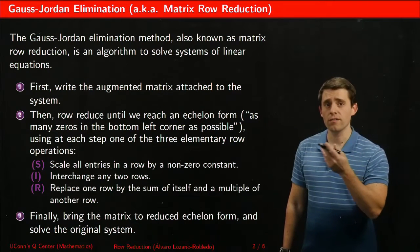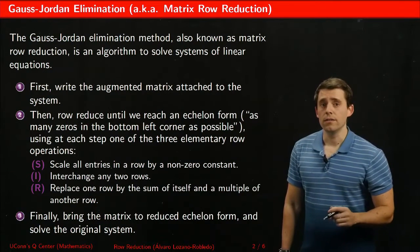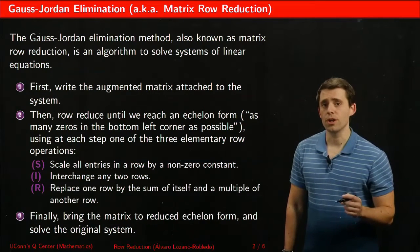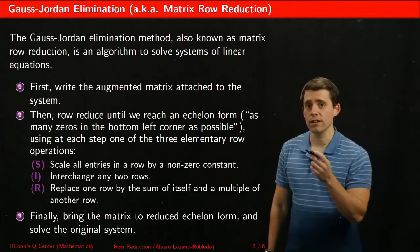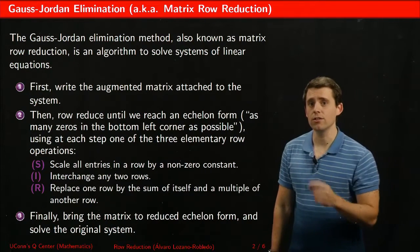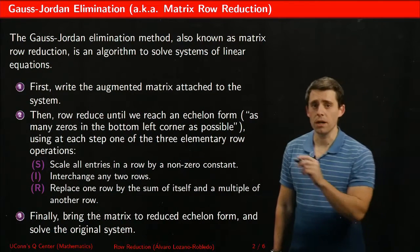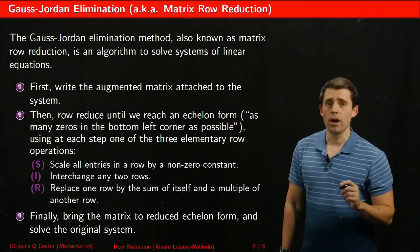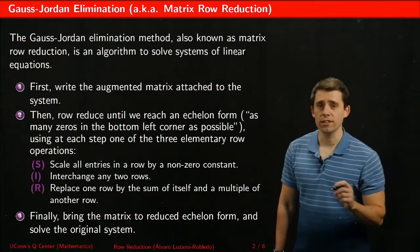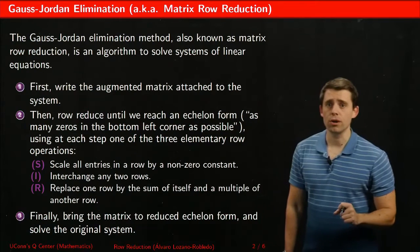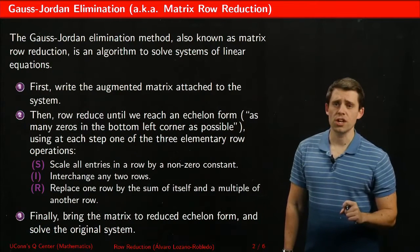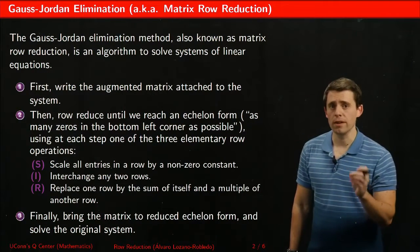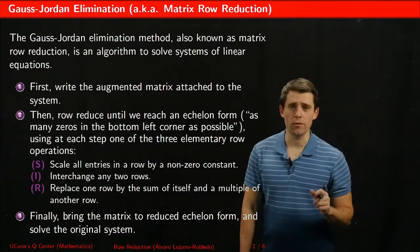Here I've listed the three possible elementary row reduction operations: we can scale, interchange, or replace. We can multiply one row by one non-zero constant, we can exchange any two rows, and we can also replace one row by the sum of itself and a multiple of another row.